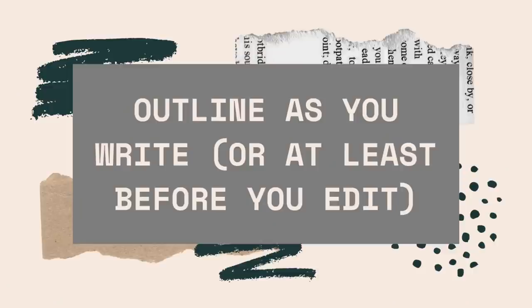Tip ten: outline as you write, or at least before you edit. As a methodological pantser, it's going to be extremely helpful for you to be able to see your entire novel at a glance. An outline is absolutely essential because you'll be able to see very quickly and easily where all your scenes are falling and how the structure is looking, giving you a valuable tool in the editing process. I recommend that you either create the outline as you go — just one or two sentences to remind yourself of what happens in each scene — or if that disrupts the flow of your writing, create the outline before you move into the editing phase. One to two sentences per scene along with the start and end page numbers can be extremely helpful.